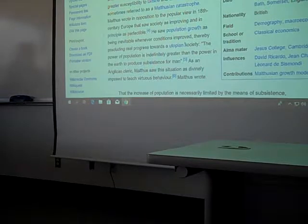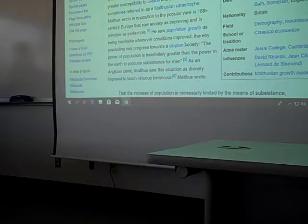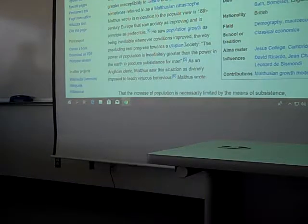Malthus, who's older than Darwin, in his 1798 book An Essay on the Principle of Population observed that an increase in a nation's food production improved the well-being of the populace, but the improvement was temporary because it led to population growth, which in turn restored the original per capita production level. In other words, mankind had a propensity to utilize abundance for population growth rather than for maintaining a high standard of living. You end up in a Malthusian trap with susceptibility to famine, disease, and war.